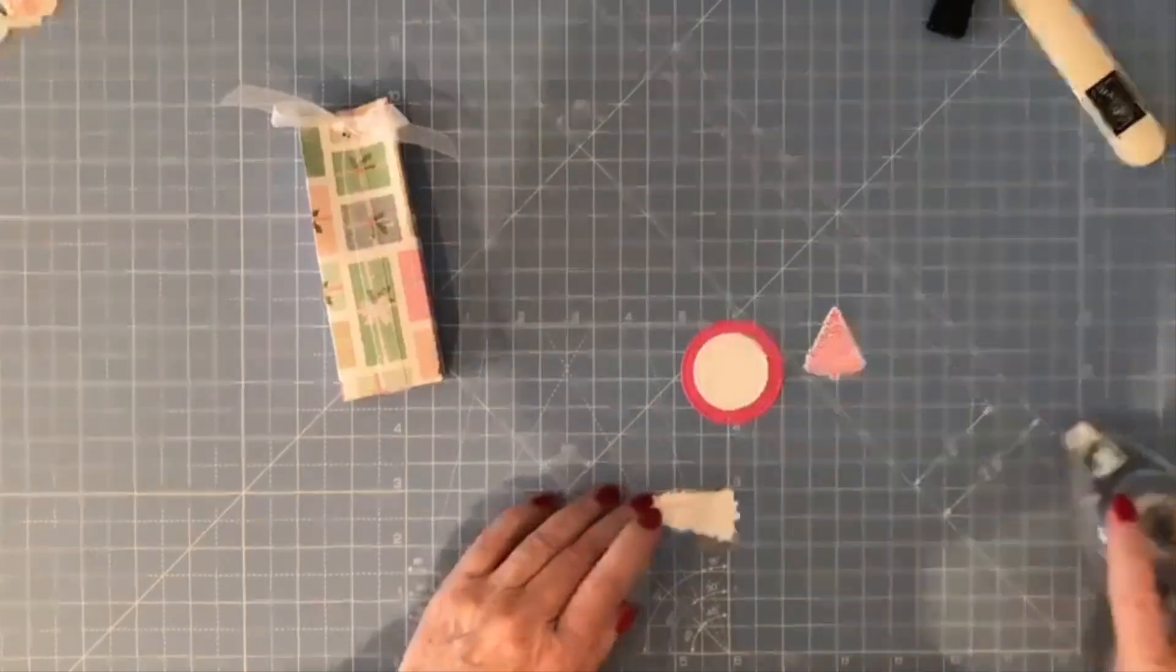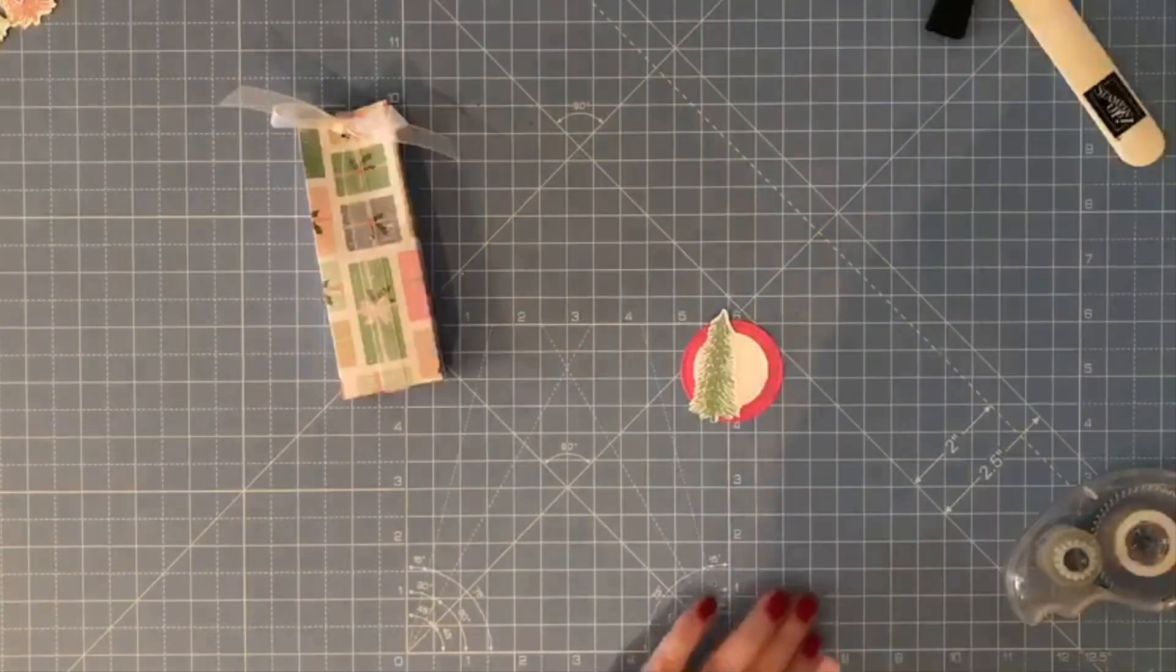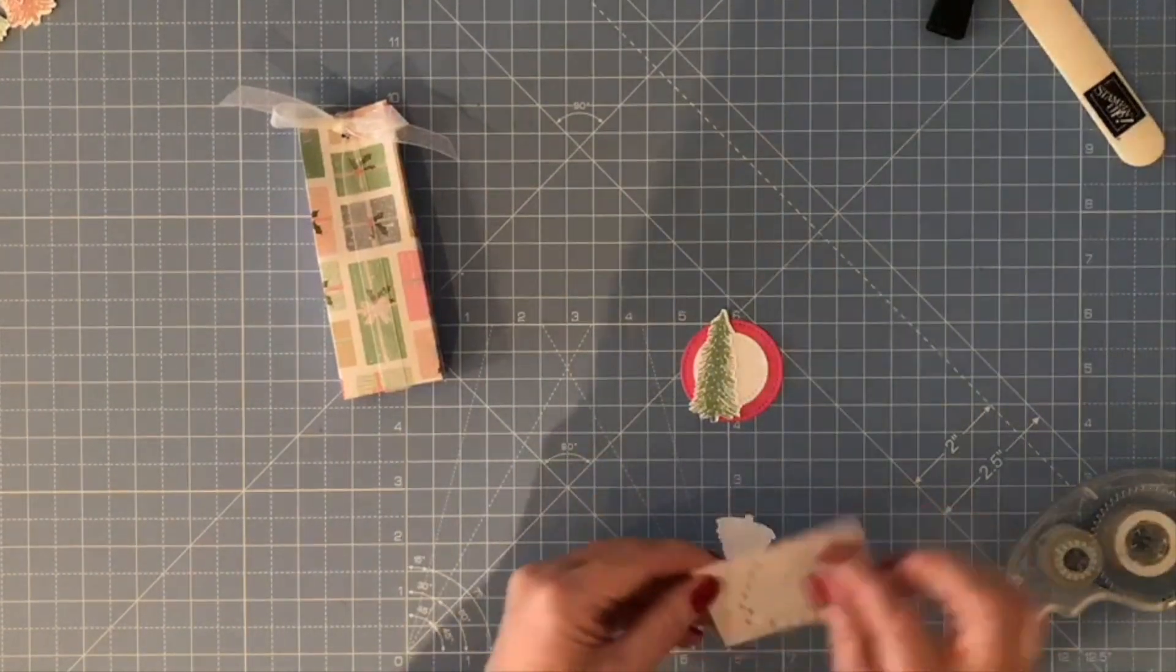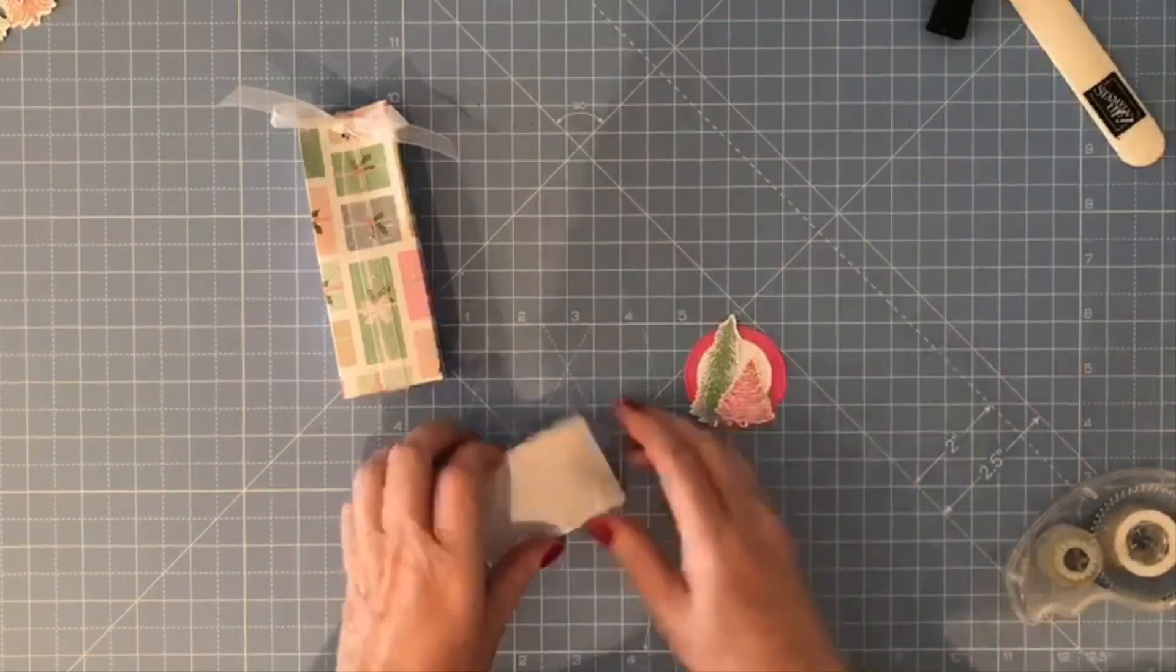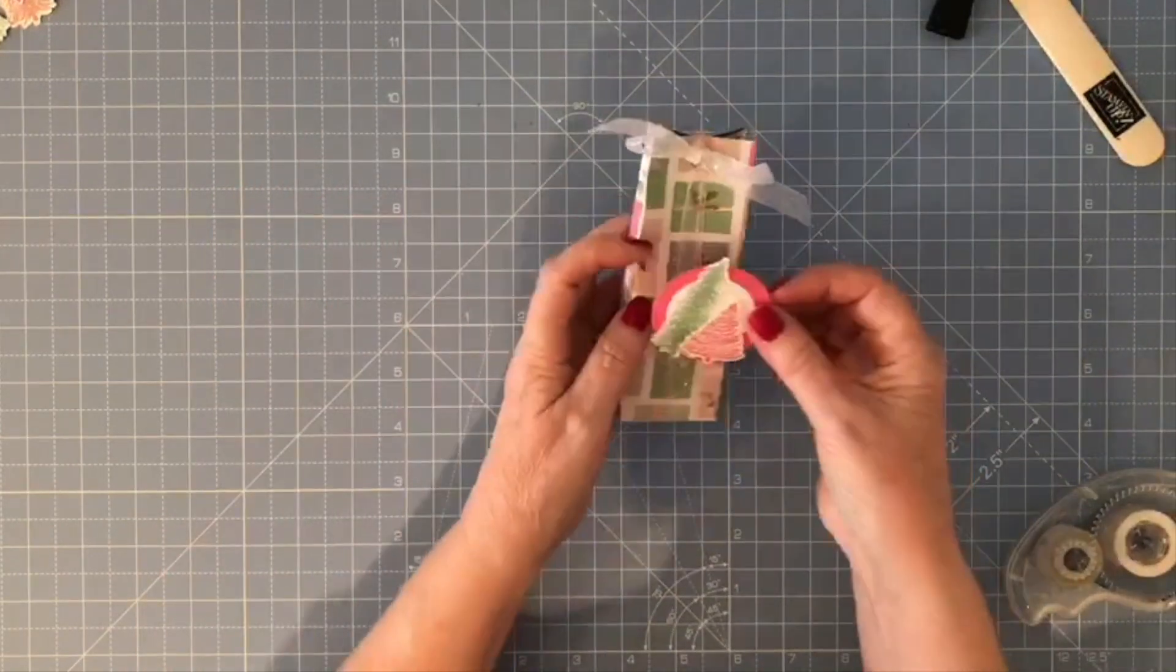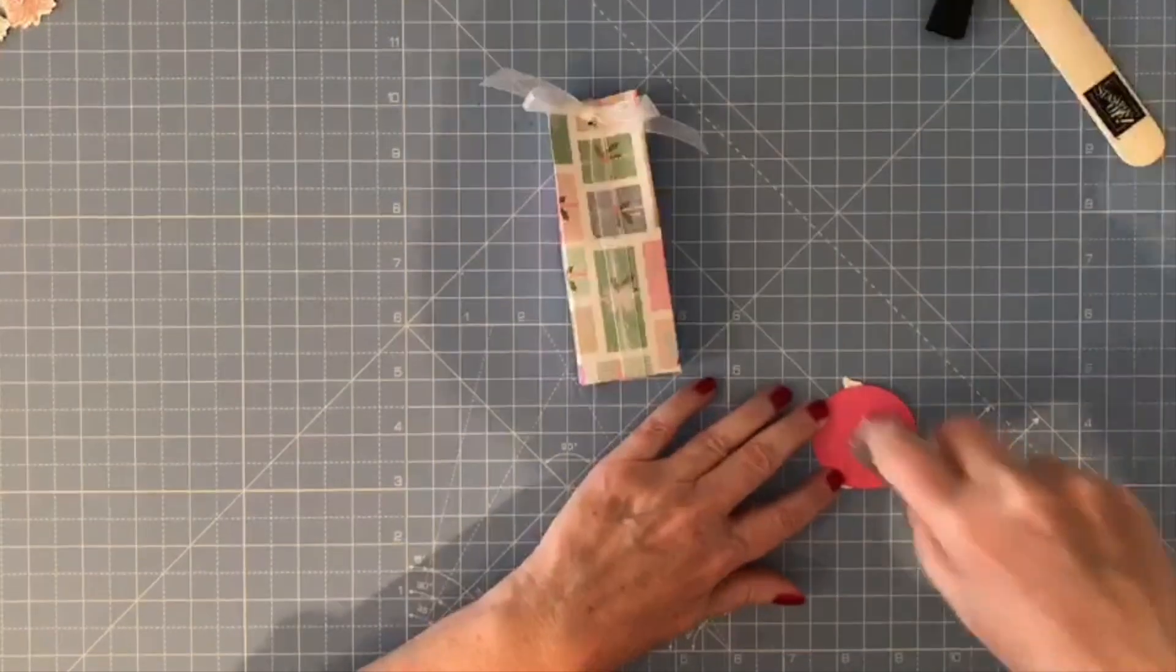Then I have stamped and die cut a couple of the trees using Mint Macaron and Polished Pink, and these are just going to layer up on here just to add a little bit of interest. I'm going to stick one flat, like so, and pop one up on Dimensionals. Pop that like so.